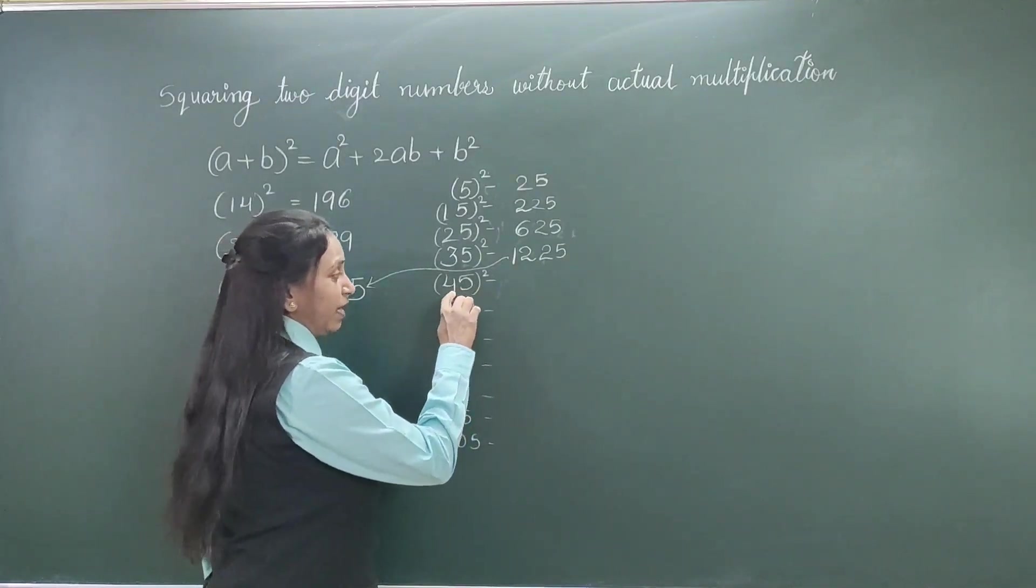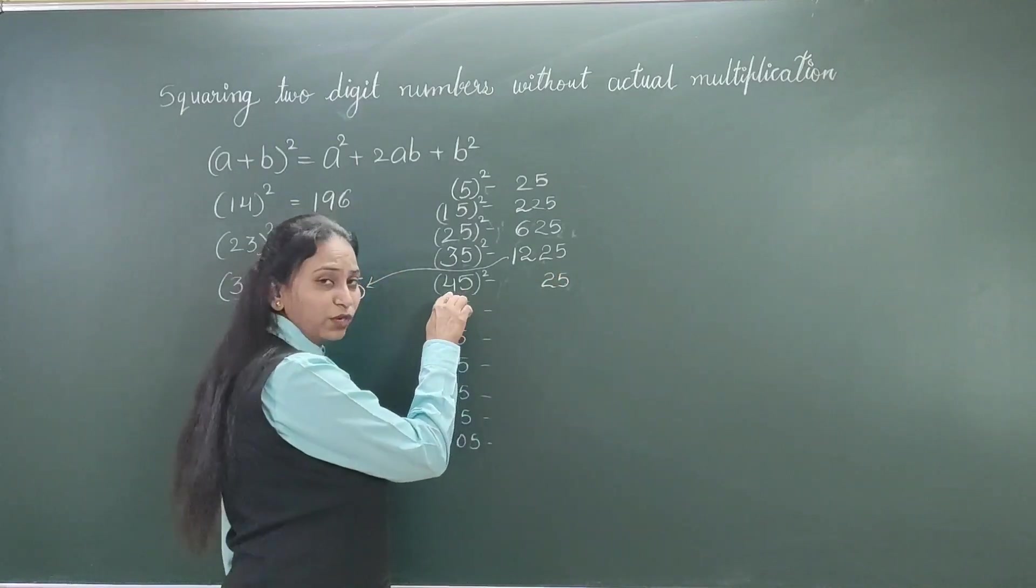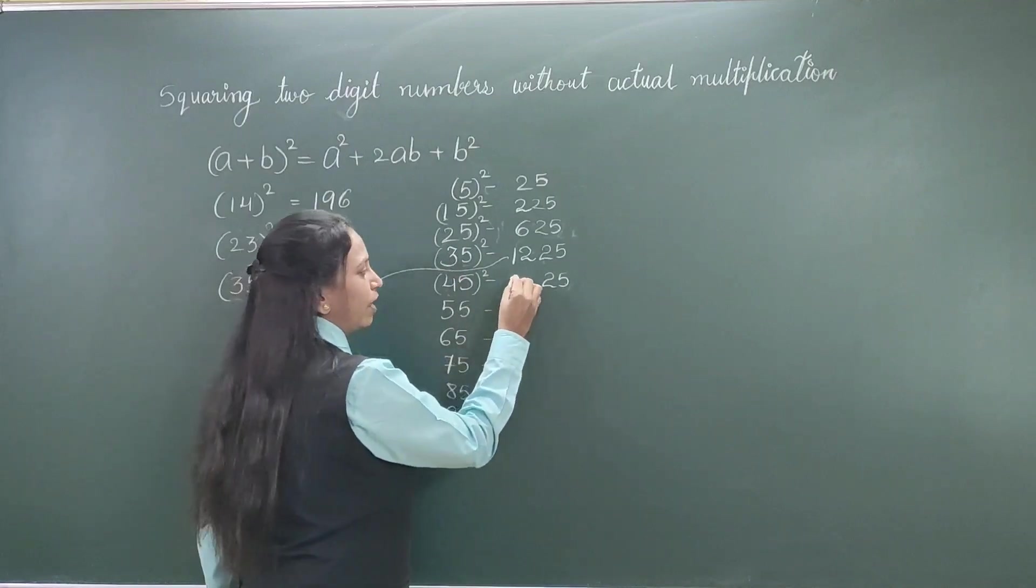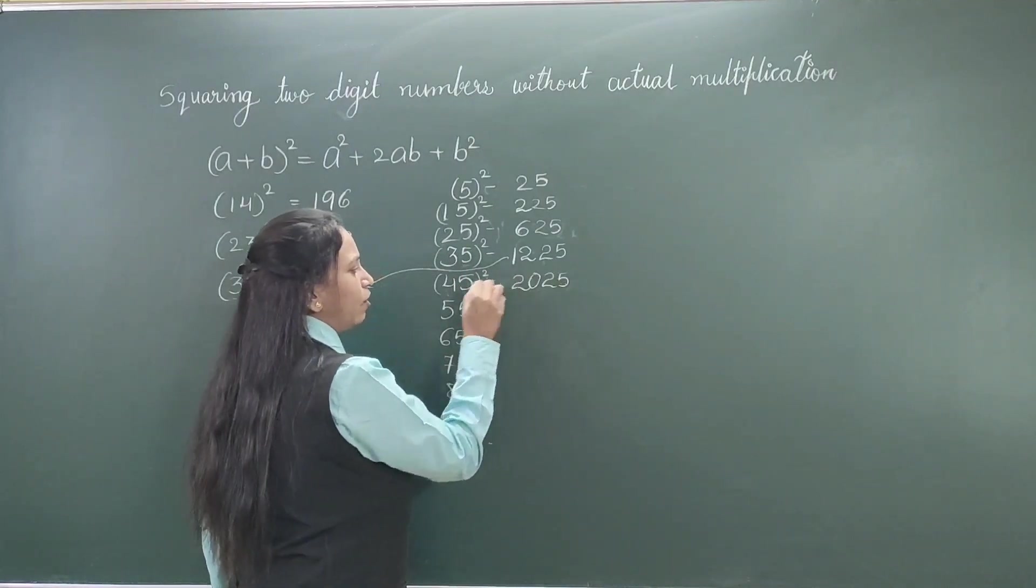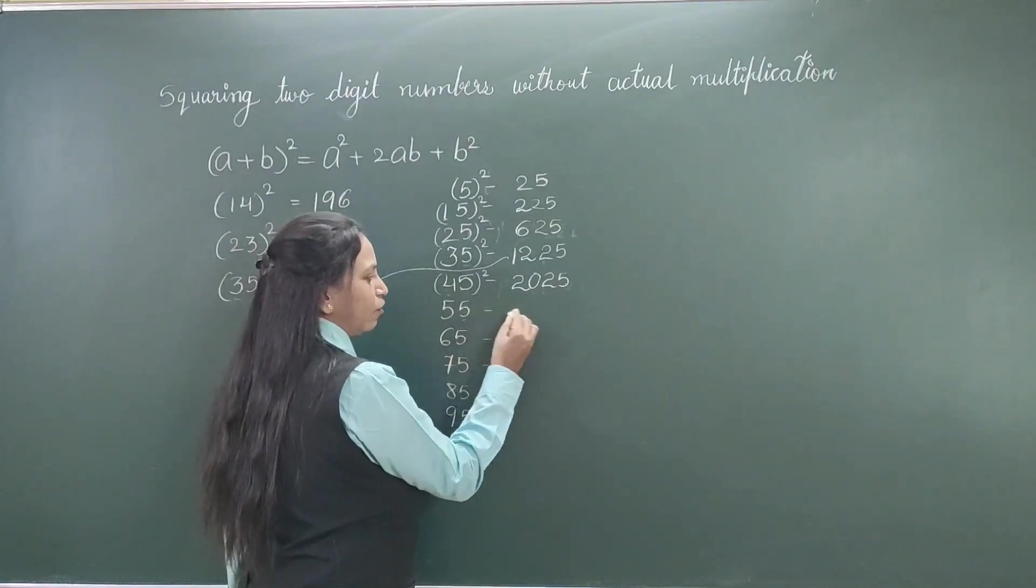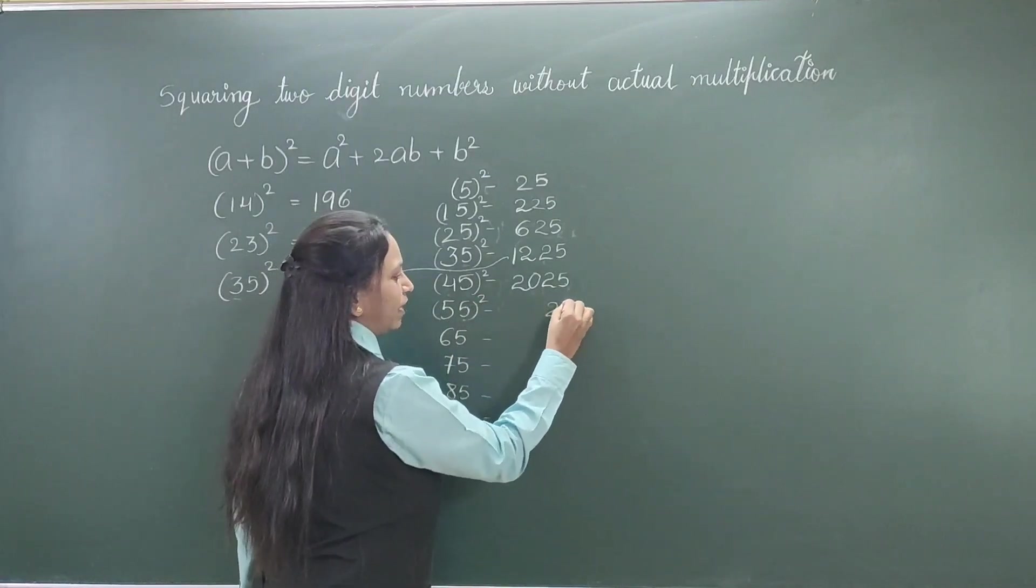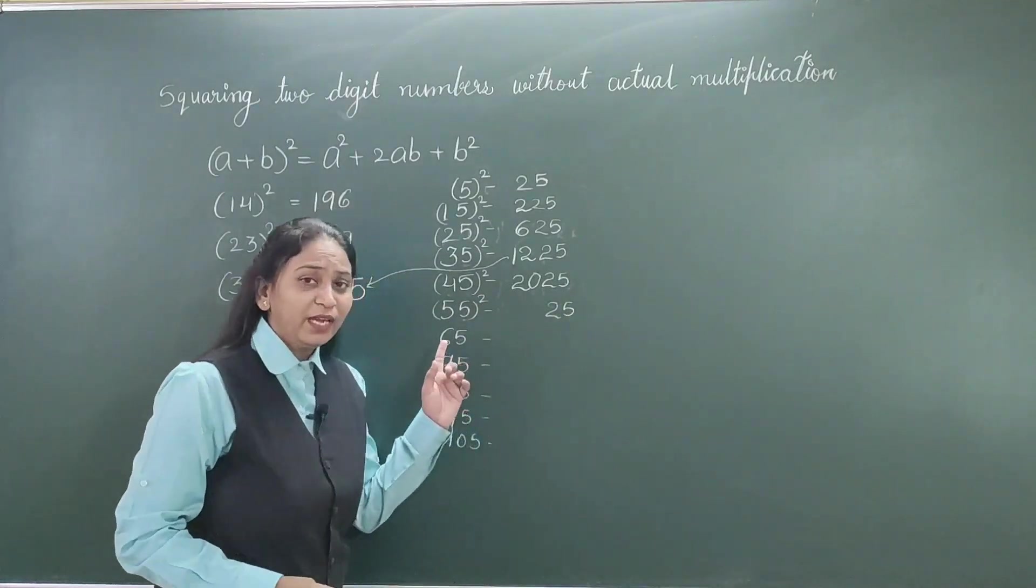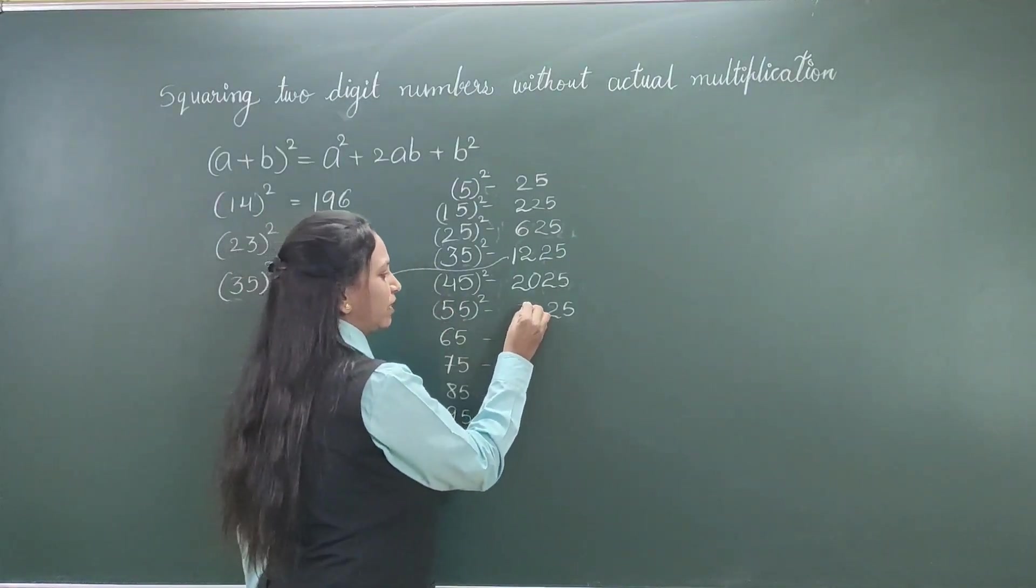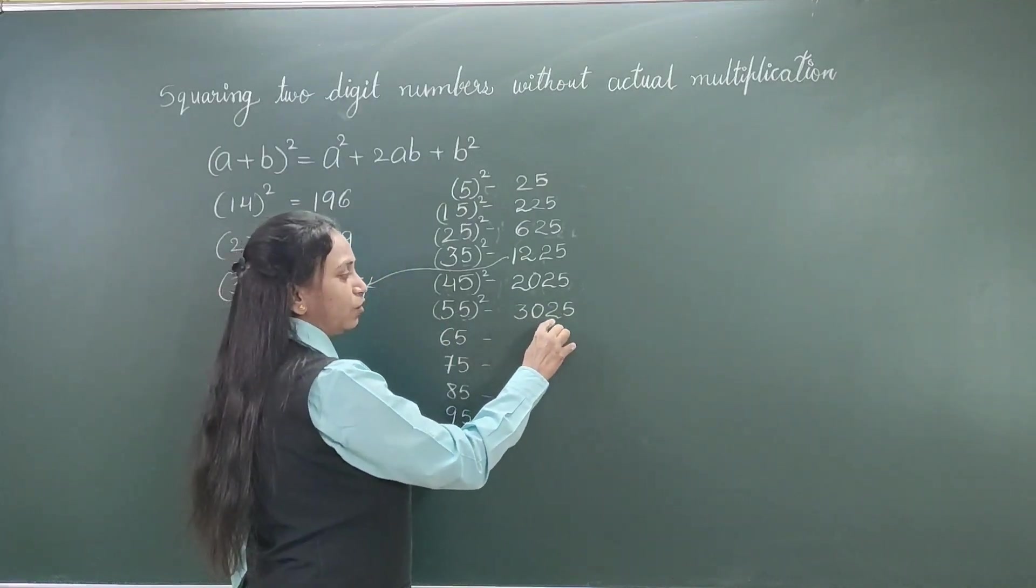And you will proceed in the same manner. Now, square of 45. Last 2 digits are 25. And the previous 2 digits, 4 × its next number. 4 × 5 = 20. So, square of 45 is 2025. Same thing over here. Square of 55. Now, it becomes easier for you. Last 2 digits are 25. And previous digits, 5 × its next number. 5 × 6 = 30. So, square of 55 is 3025.